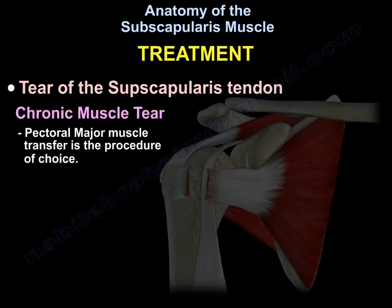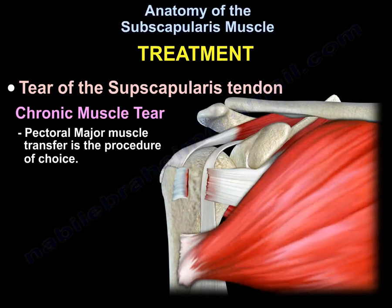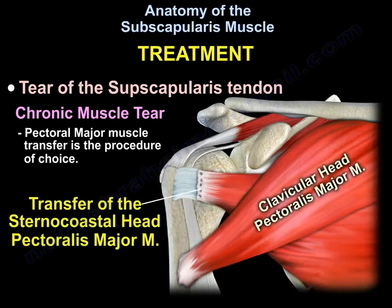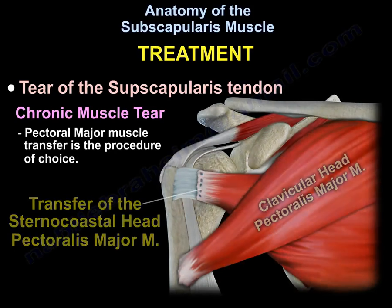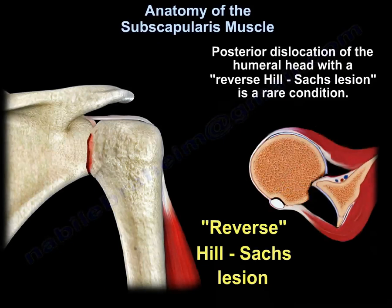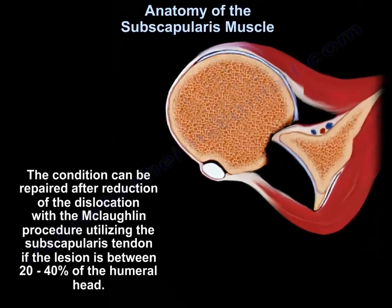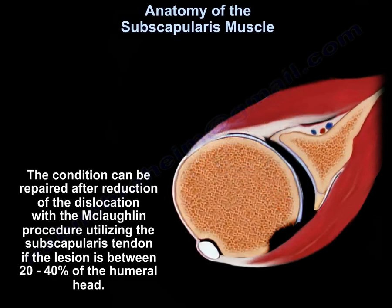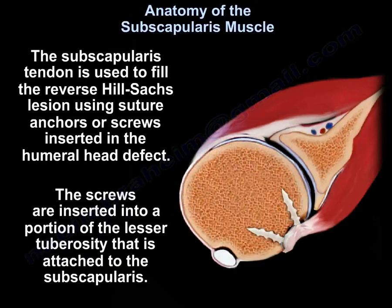In chronic muscle tears, pectoralis major muscle transfer is the procedure of choice, transferring the sternocostal head of the pectoralis major muscle. Posterior dislocation of the humeral head with reverse Hill-Sachs lesion is a rare condition that can be improved after reduction of the dislocation with the McLaughlin procedure utilizing the subscapularis tendon if the lesion is between 20 to 40% of the humeral head. The subscapularis tendon is used to fill the reverse Hill-Sachs lesion using suture anchors or screws inserted into the humeral head defect at the lesser tuberosity attached to the subscapularis.